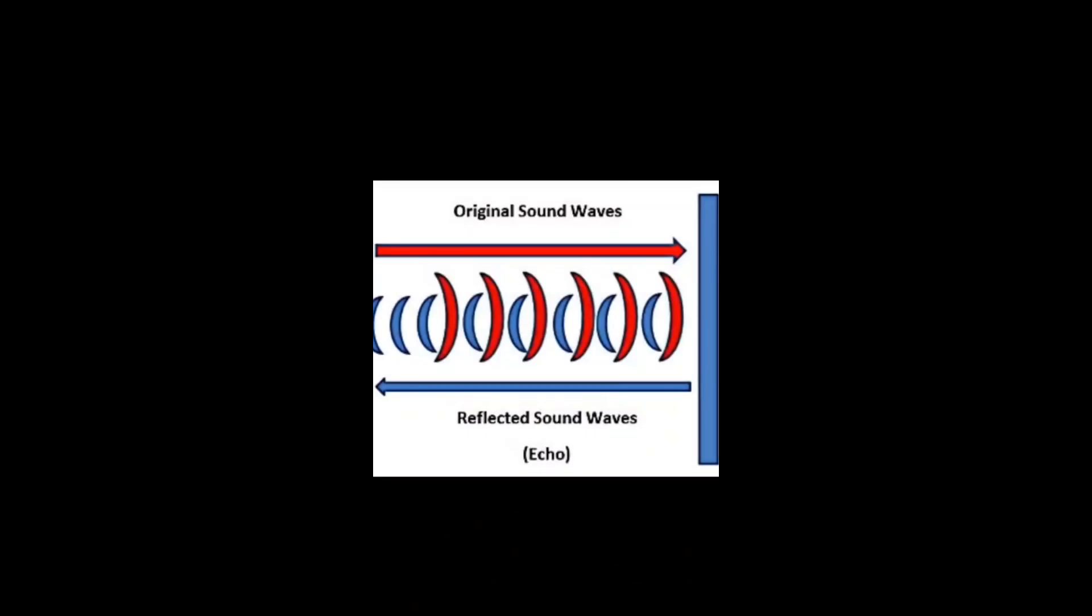What are echoes? Echoes are sound waves that are reflected from hard surfaces. The red arrow indicates the original sound movement, and the blue colored arrow pointing from right to left indicates the reflected sound waves. After reflecting from hard surfaces, we hear a sound that is known as echo.